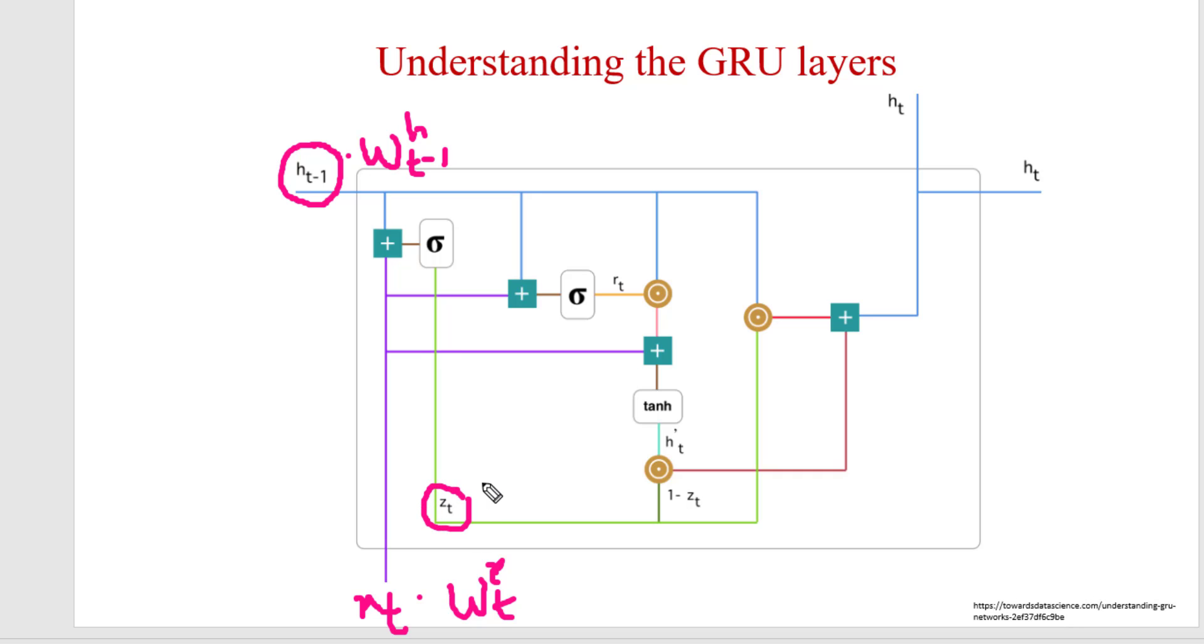If we are getting output as 1 or close to 1, then that information is important and we need to pass this information to the next state. If the output is 0 then this information is not so important and we have to skip this information. So this is all about update gate.